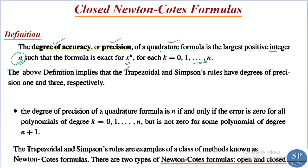The above definition implies that the trapezoidal and Simpson's rules have degrees of precision 1 and 3 respectively. That means the trapezoidal rule has precision 1 and Simpson's rule has precision 3. Because in the trapezoidal rule, the error term contains the second derivative of f, therefore it has precision 1. And in Simpson's rule, the error term involves the fourth derivative of f, so it has degree of precision 3.